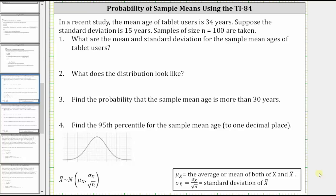In this example, we will use the TI-84 to determine a probability and percentile of a sample mean distribution. In a recent study, the mean age of tablet users is 34. Suppose the standard deviation is 15 years. Samples of size n equals 100 are taken.